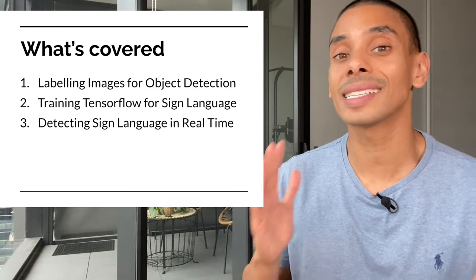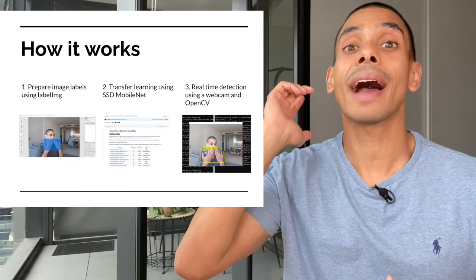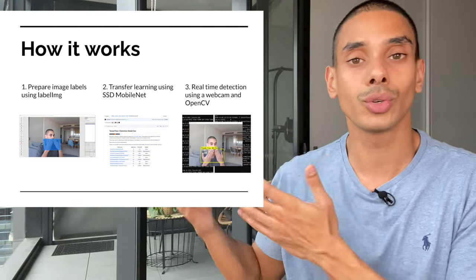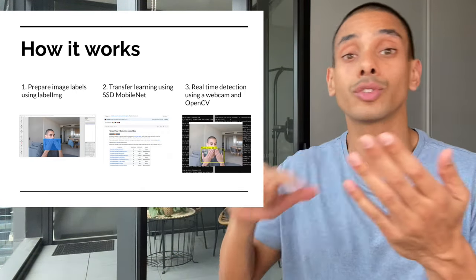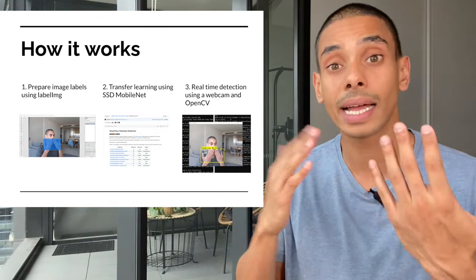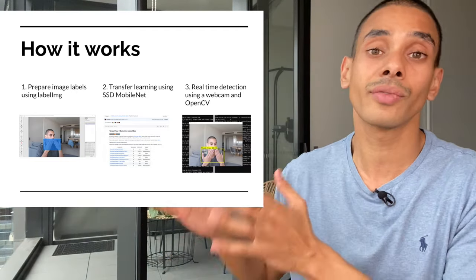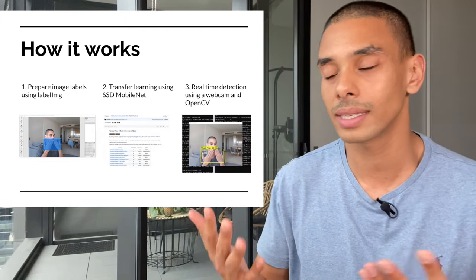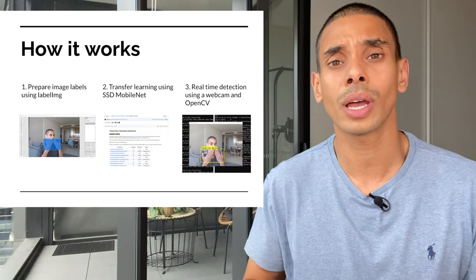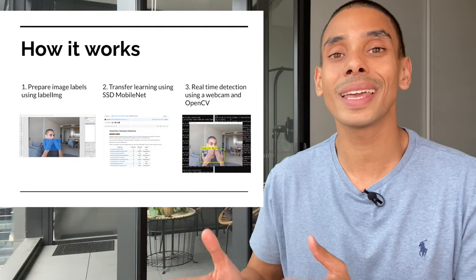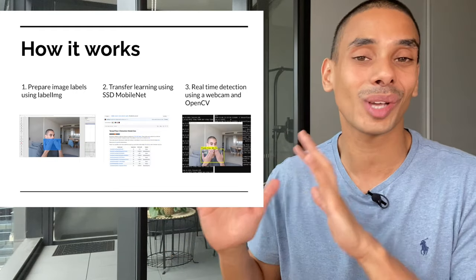Let's take a look at how all of this fits together. We'll use our webcam to collect images for training. Those images will be passed to LabelImage and we'll draw detection boxes against our different sign language poses. We'll then use transfer learning with the TensorFlow Object Detection API to train an object detector, and finally use Python and OpenCV to detect those poses in real time.